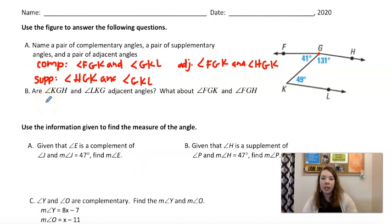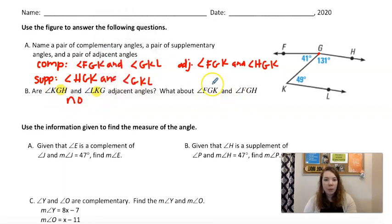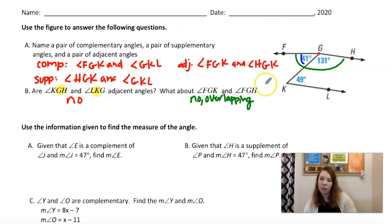All right, are angle KGH and LKG adjacent? Right away, their center letter is not the same. So they don't share a vertex. So this is a no before I even look at the picture. Here, these both have G in the middle. So that's a good start. So FGK. So they're talking about this one. FGK versus FGH. Which, they should only have one side in common. But these have two in common. Is that right? I guess they still have one in common. But they're overlapping. They're not allowed to overlap. So no overlapping.